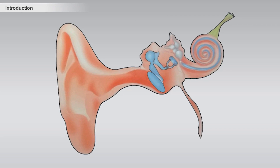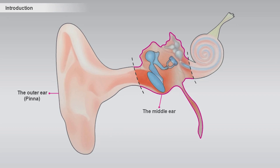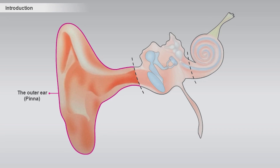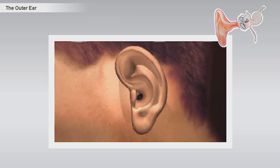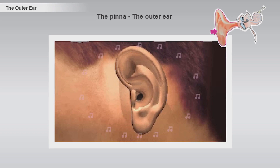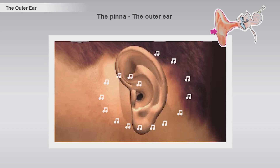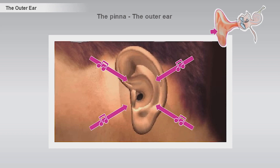The ear is normally divided into three sections: the outer ear, the middle ear, and the inner ear. The tour begins at the outer ear. The outer ear, also called the pinna, is placed on the side of the head and forms the visible part of the hearing pathway. It consists of skin-covered cartilage and mainly serves to collect the sound vibrations and direct them into the ear. The shape and folds of the outer ear help to locate where sounds are coming from.